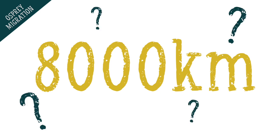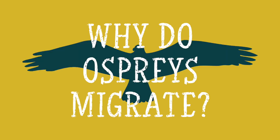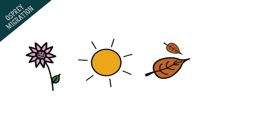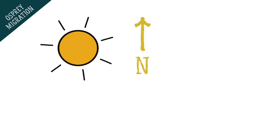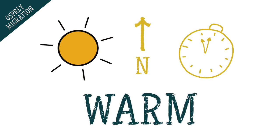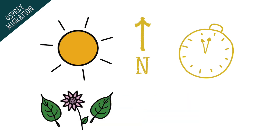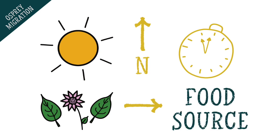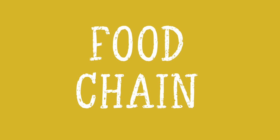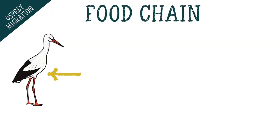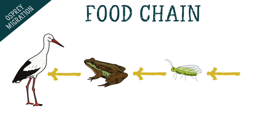So why do they migrate? Well it's all to do with seasons and what comes with them. During the summer in northern countries the days are very long and sunny and so the climate is warm. This means that plants and algae are able to grow really fast which provides food for other animals, and this is the start of a food chain. A food chain is a series of creatures or organisms that depend on the next organism in the chain as a source of food.